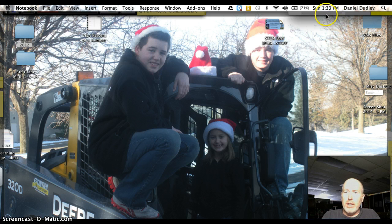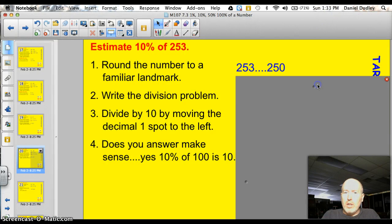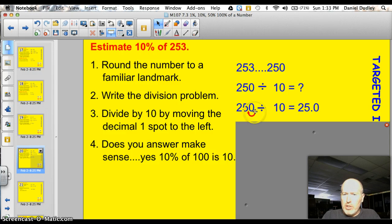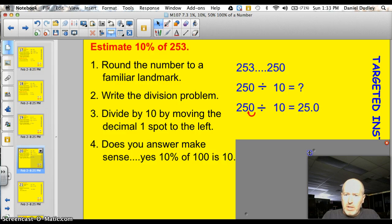Alright, let's see how you did. Well, if you round to a familiar landmark, I rounded 253 to 250. Then, I took 250 and I divided it by 10. Without my calculator, I just moved the decimal one spot to the left, and I had 25. Does this answer make sense, that 25 is 10%? Well, sure it does. Because 10% of 100 is 10, so 10% of 200 is going to be 20, and so on. Okay.